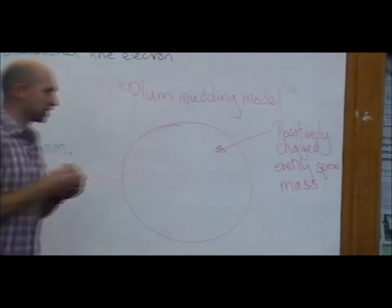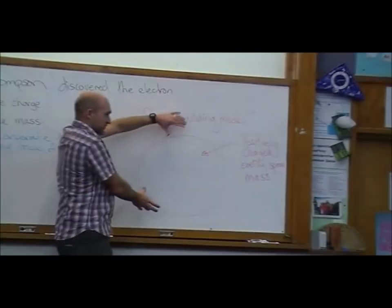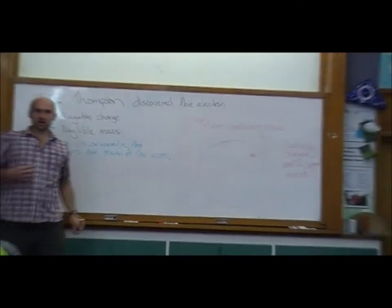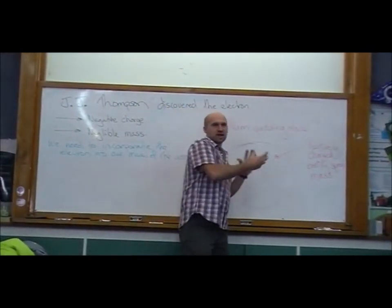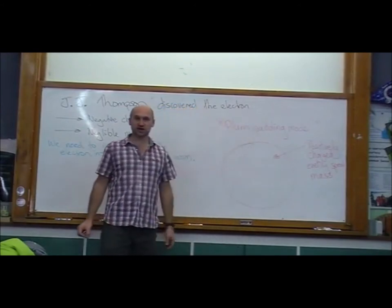So what J.J. Thompson did is started off with a sphere, so the atom's still going to be a bowling ball, but that bowling ball is going to be positively charged, evenly spread mass, so positive charge and mass, kind of evenly spread through the sphere.